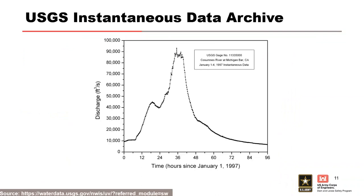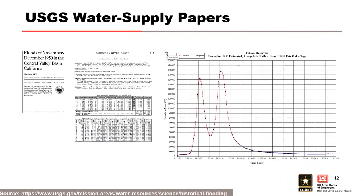Here is an inflow hydrograph from the USGS instantaneous data archive, this one from the Cosumnes River in California. USGS water supply papers contain data on specific floods — this example is December 1950, 1955, and 1964. Instantaneous streamflow data at variable time increments, usually bi-hourly at peaks or inflection points, can be keyed into a spreadsheet or other software, and then hourly values can be interpolated for use in RFA.